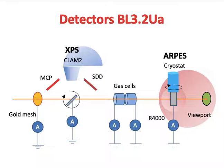At the XPS station, we have an S-polarized configuration. However, at the ARPES station, we have a P-polarized configuration.